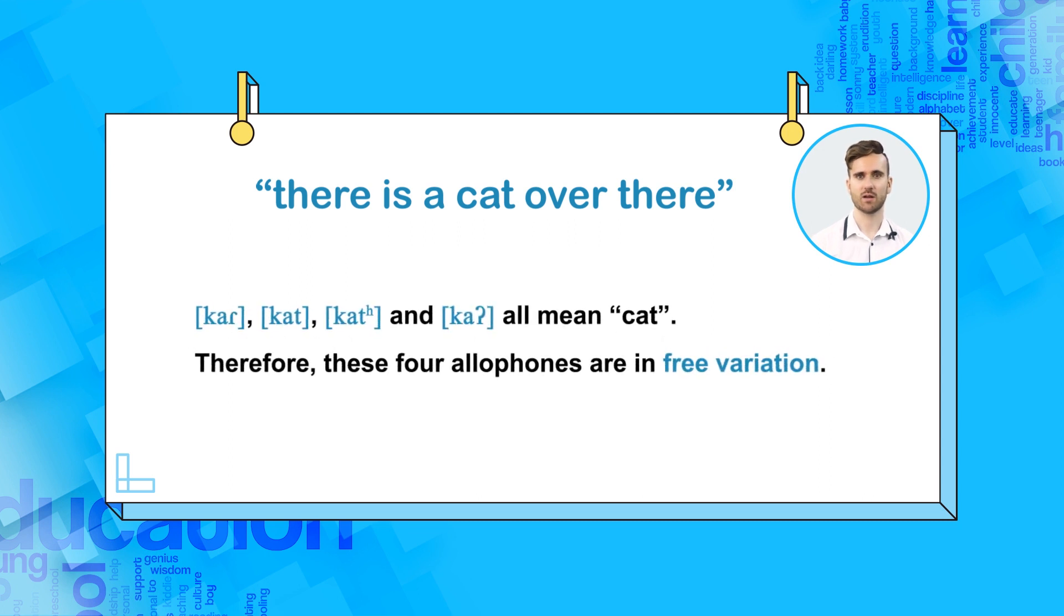These four sounds are all allophones of the phoneme t. It doesn't matter which sound you use, because it still means cat. In other words, if an American says cat, an Englishman says cat, an Englishman breathing heavily says cat, or someone in a hurry says cat, they all said the same word.